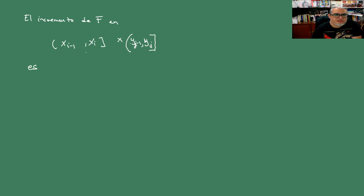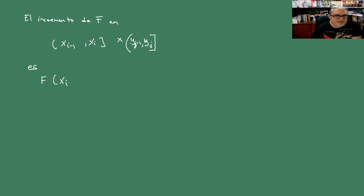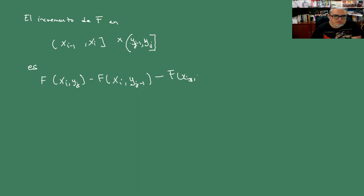El incremento de la función de distribución en cada uno de estos rectángulos lo podemos escribir como F evaluada en X_i, Y_j, menos lo que pasa en las orillas: F de X_i, Y_{j-1} y F de X_{i-1}, Y_j.